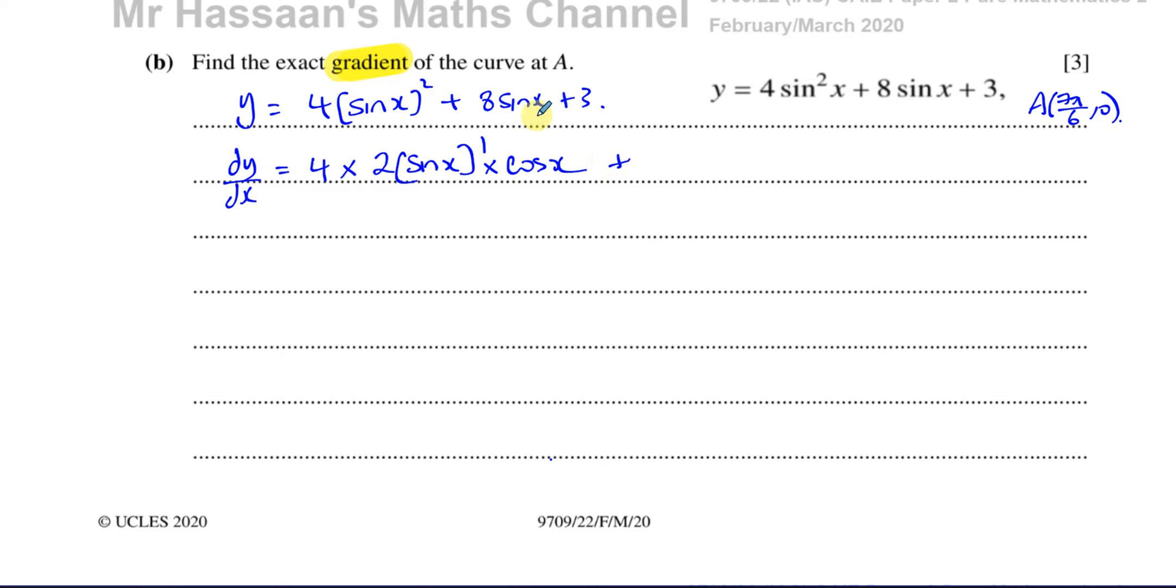Now, differentiating 8 sine x is a bit easier. When you differentiate sine x, you get cosine x, as shown in the formula sheet. That's going to be 8 times cosine x. And when you differentiate a constant like 3, it becomes 0. So the gradient function dy/dx is equal to 8 times sine x times cosine x plus 8 times cosine x.